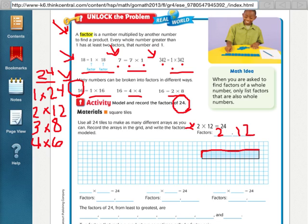Can you do 5 times anything to get 24? No. So can you do 6 times anything to get 24? Yes, you can do 6 times 4.